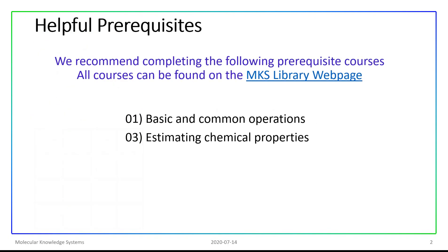We recommend completing the following prerequisite courses: Course 1, Basic and Common Operations, and Course 3, Estimating Chemical Properties. These two courses will give you a good understanding to follow the activities we will be doing in this demonstration. Both of these courses can be found on the MKS website, specifically on our library page.